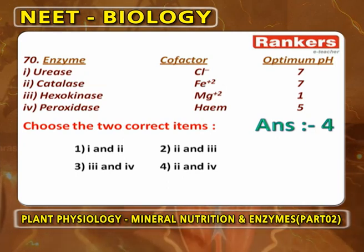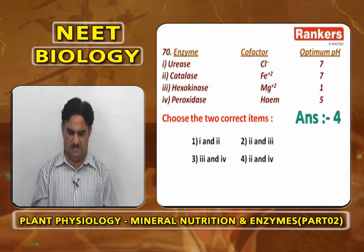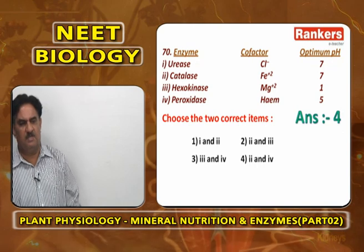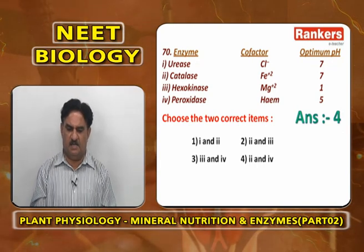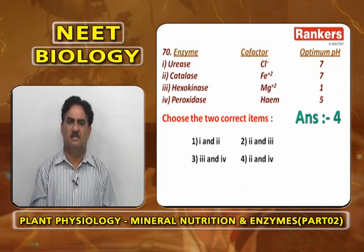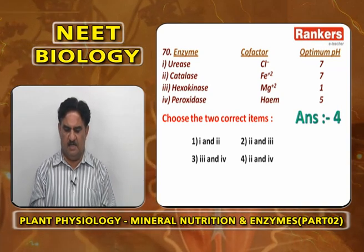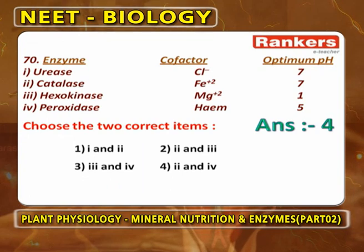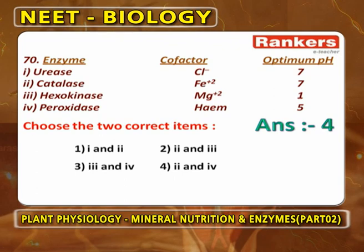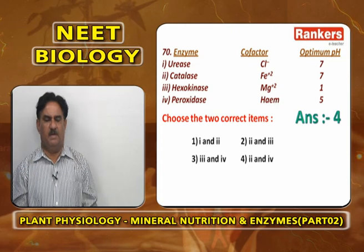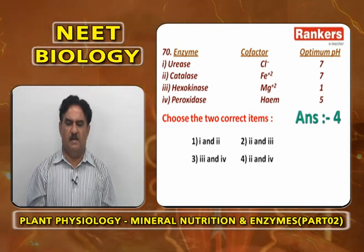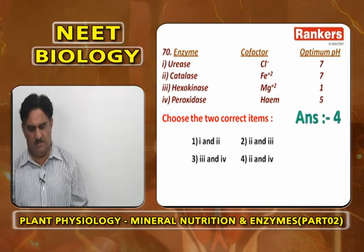For the table of enzyme, cofactor, and optimum pH: Urease with chlorine at pH 7 is wrong — urease is not controlled by chlorine. Catalase with iron at pH 7 is correct. Hexokinase with magnesium at pH 1 is wrong — pH 1 is not established in syllabus. Peroxidase with heme moiety at pH 5 is correct. Answer is options 2 and 4.